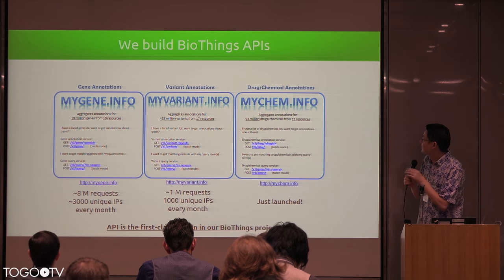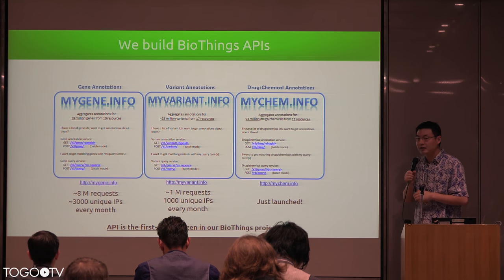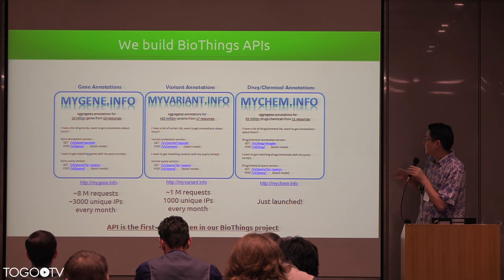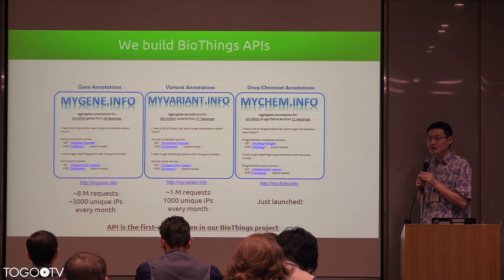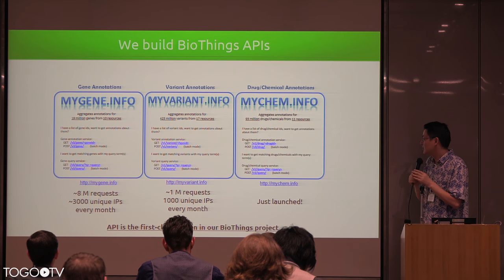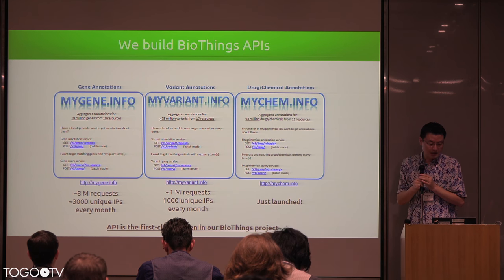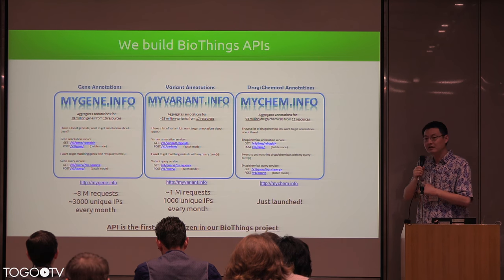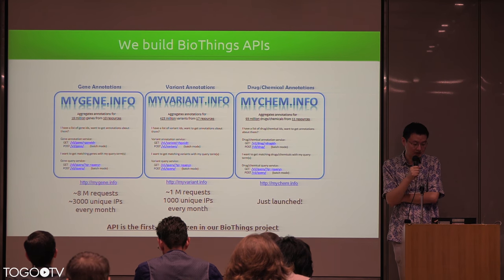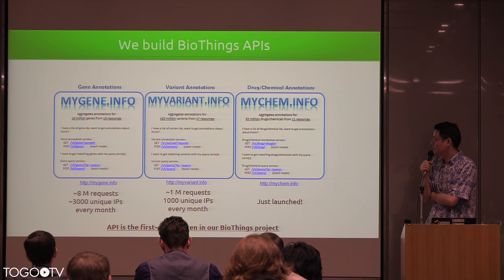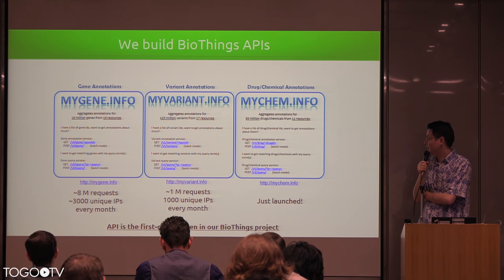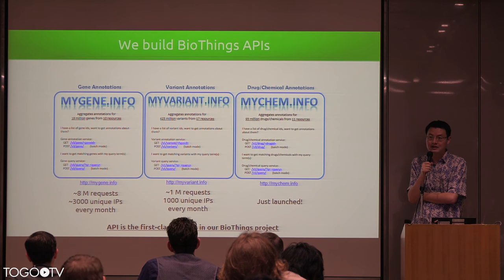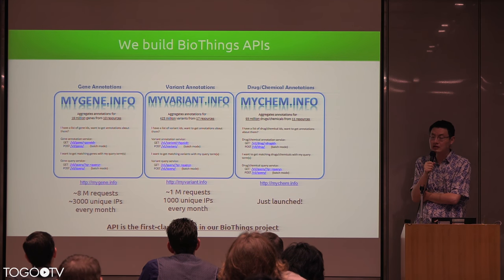Here's an overview of the three main APIs we provide in the BioThings project. You can go to each website to get more information. These APIs provide very quick and simple-to-use access, and they've been very popular in the community. The MyGene one was the first created — right now we have about 8 million requests every month, from about 3,000 unique IPs.